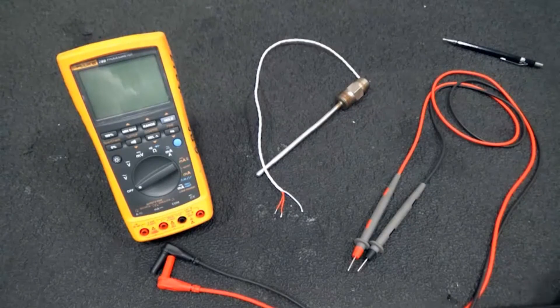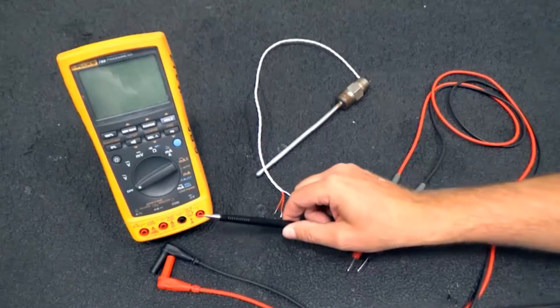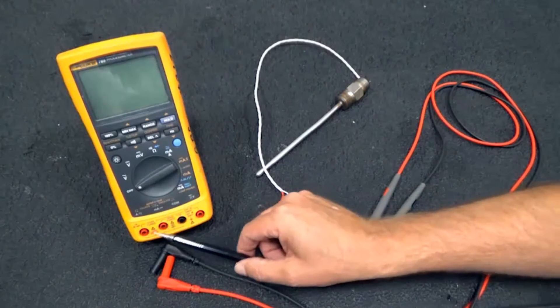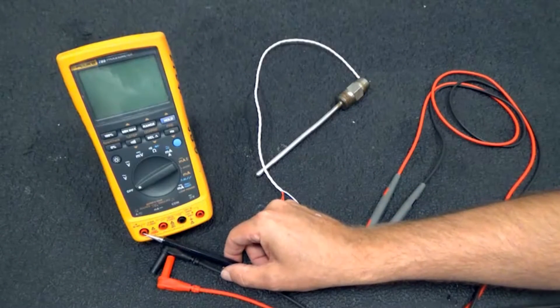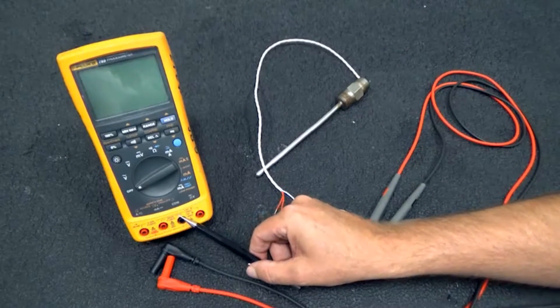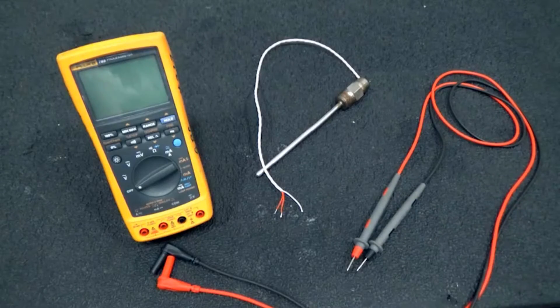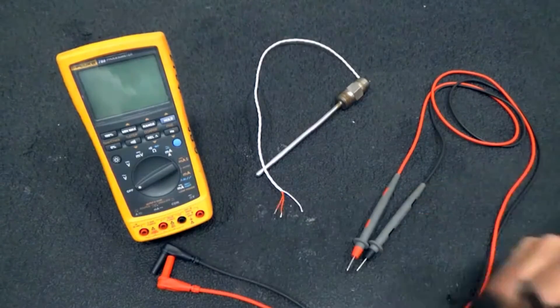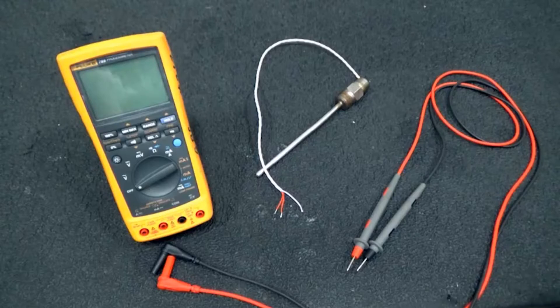This is an 89 process multimeter. One of the first things you're going to notice is you've got four different places to plug in down here. One, the black one's the common, and where you plug in depends on what type of measurement you want to make.